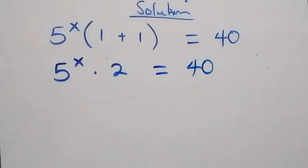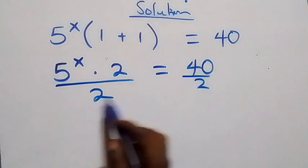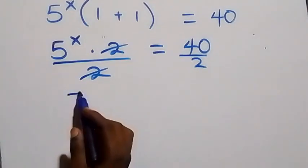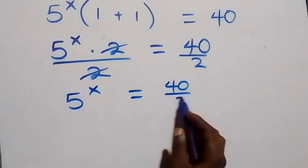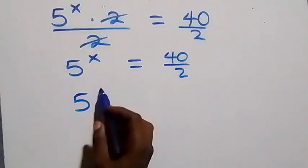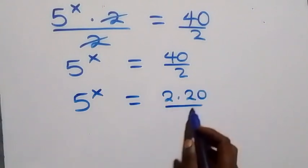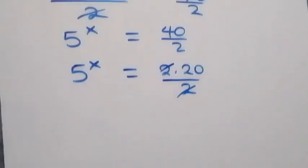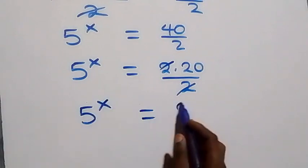The next step: we divide both sides by two. The two cancels, and we are left with 5 raised to the power x equals 40 over two, which simplifies — two also cancels — and we have 5 raised to the power x equals 20.